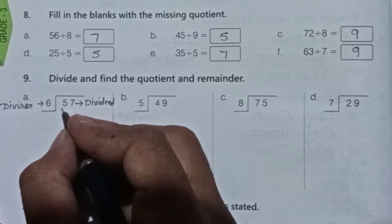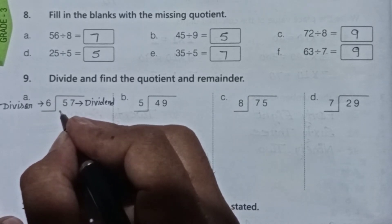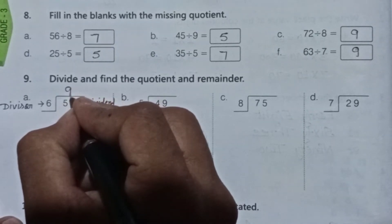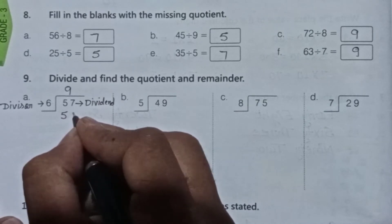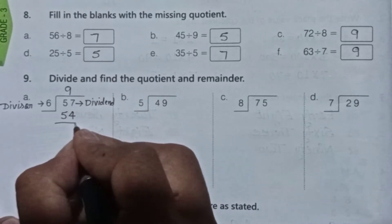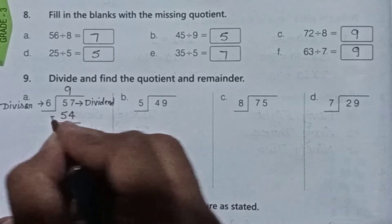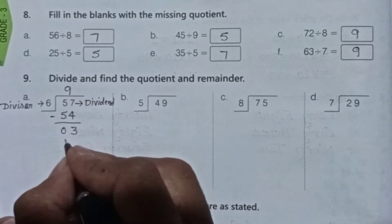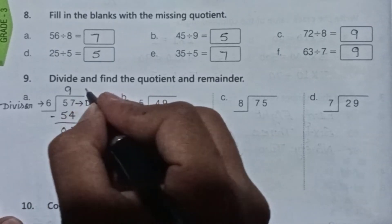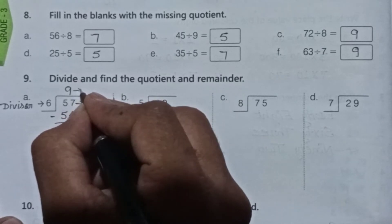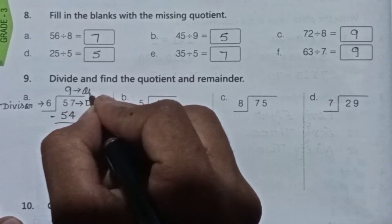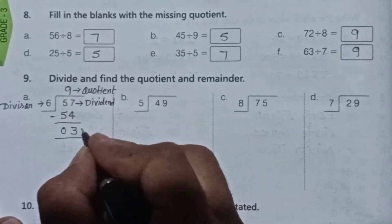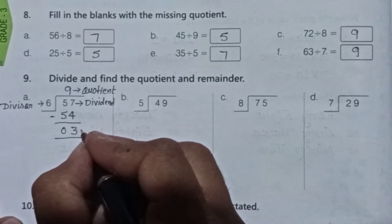Part (a): divide 57 by 6. 6 times 9 equals 54 — that is as close to 57 as we can get. We subtract: 57 minus 54. 7 minus 4 equals 3, 5 minus 5 equals 0. The quotient is 9 and the remainder is 3.